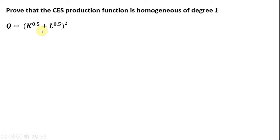Here is the CES production function that we'll be working with. To test for homogeneity, we're going to multiply each input, capital and labor, by a constant C.